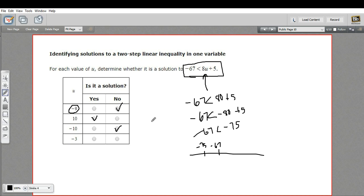All right. Let's try negative 3. So negative 67 is less than 8 times negative 3 plus 5. And I'm pretty sure this is going to work.